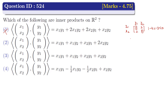The matrix representation of Option 2 is [[1, 1], [1, 2]]. Since the diagonal elements 1 and 2 are positive, and the determinant is 2 − 1 = 1, which is greater than 0, this implies Option 2 is an inner product.